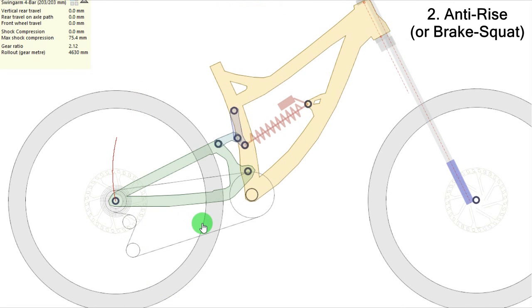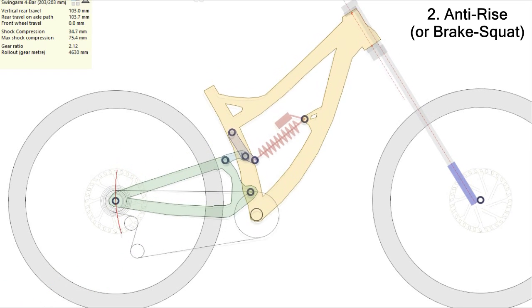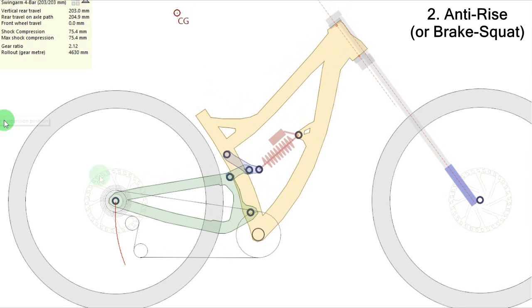Now let's see the anti-rise or the brake squat, which basically are due to the rotation of the brake caliper around the disc when the suspension compresses. So check the rotation of the caliper around the disc when the suspension compresses. As you can see, the caliper rotates around the disc.